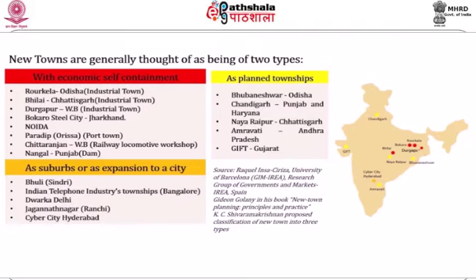New towns are also planned townships and planned capitals, like Bhubaneswar in Odisha, Chandigarh, Naya Raipur, Amravati, and GIFT City. Not all of them are capital cities — for example, GIFT City is a greenfield development but not a capital. You can see their locations from this map.